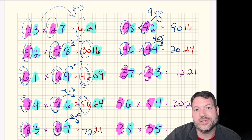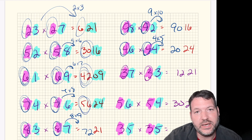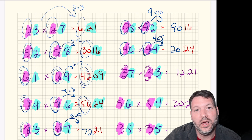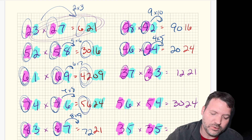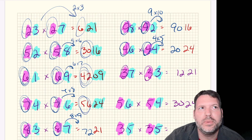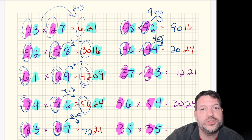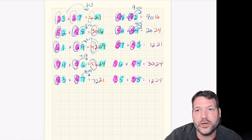So here's the summary of the trick: multiply the ones digits and write that down as the last two digits of your product. Then take the tens digit and multiply it by the next consecutive integer — that becomes the first digits of your product. If you're in the tens or twenties you may get a three-digit product; above the twenties you'll get a four-digit product.